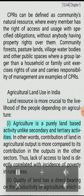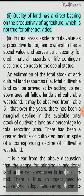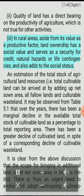Agricultural Land Use in India. Land resource is more crucial to the livelihood of people depending on agriculture. Agriculture is a purely land-based activity unlike secondary and tertiary activities. The contribution of land in agricultural output is more compared to its contribution in the outputs of other sectors. Thus, lack of access to land is directly correlated with incidence of poverty in rural areas. Quality of land has a direct bearing on the productivity of agriculture, which is not true for other activities. In rural areas, aside from its value as a productive factor, land ownership has a social value and serves as security for credit, natural hazards or life contingencies, and also adds to social status.